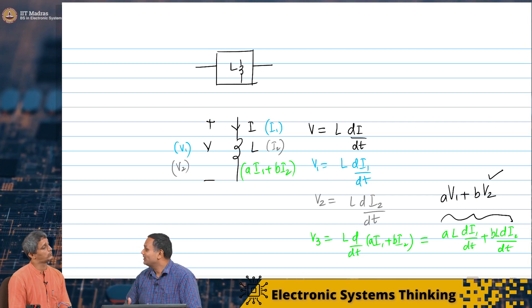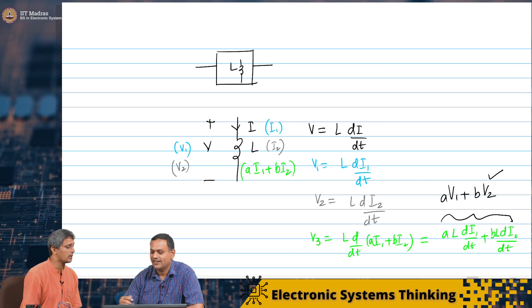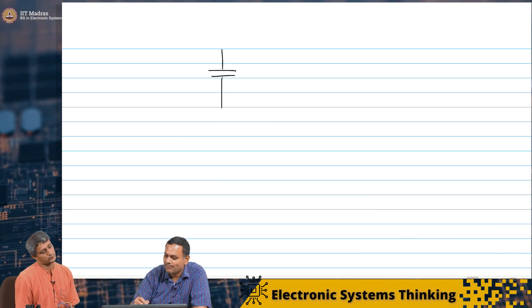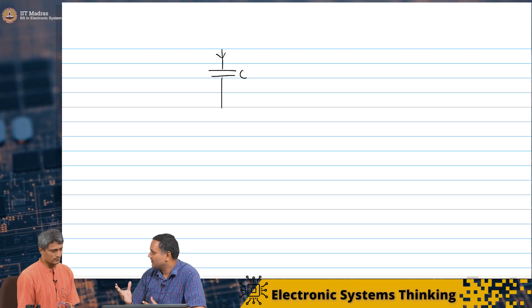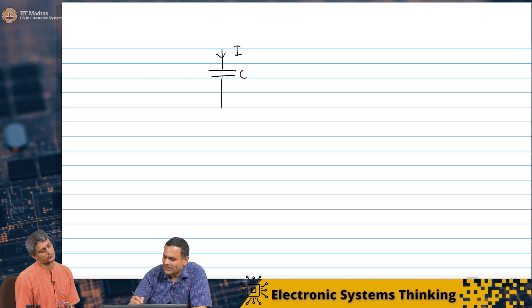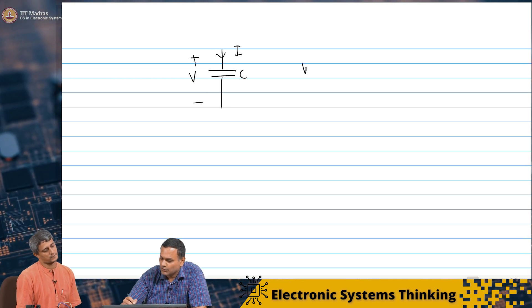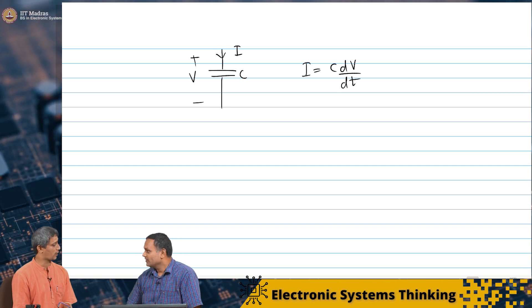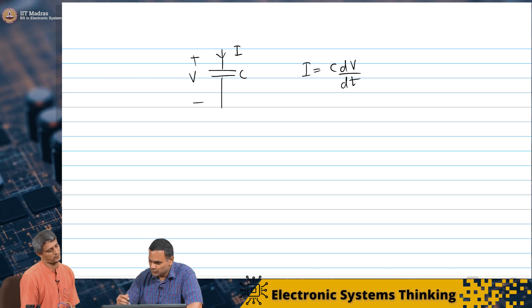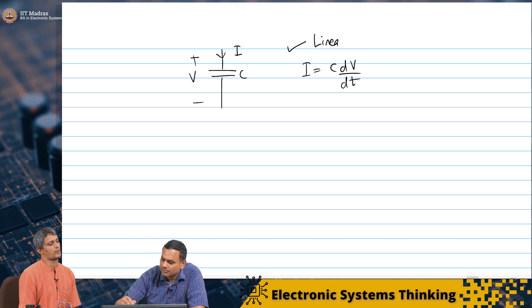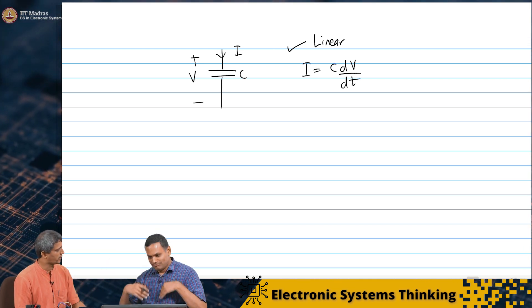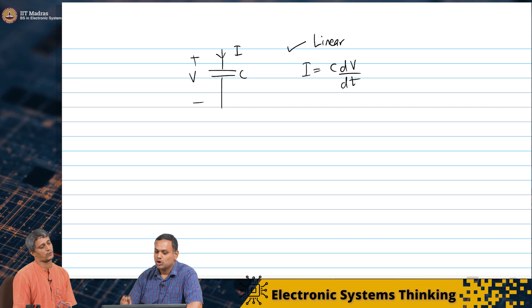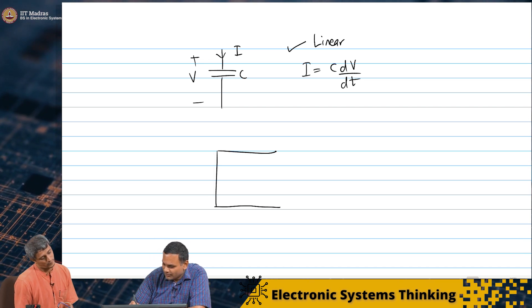You can do the same thing for a capacitor, because the current through a capacitor is I = C·dV/dt, which is also a differential operator, so it is also a linear element. Likewise, you can convert to the integral form V = (1/C)∫I dt, and the integral operator is also linear. Therefore, a capacitor is also a linear element.